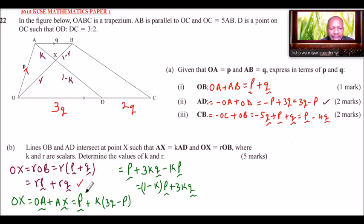This is OX and this is OX. We can actually equate these two. Since they represent the same vector, we say RP plus RQ is the same as 1 minus K times P plus 3K times Q. The two vectors are the same. This means that R, we can equate R which is a constant to 1 minus K, and we can say R equals 3K. So we can start with R equals 3K because they are the scalars or constants of Q.